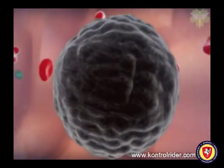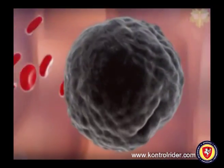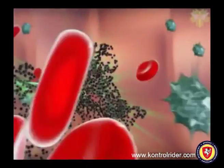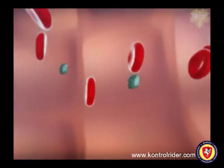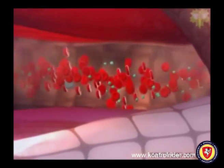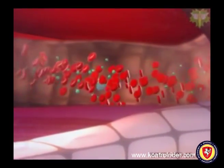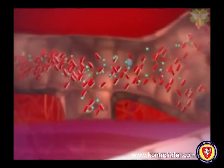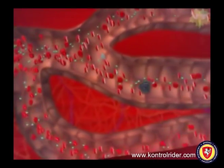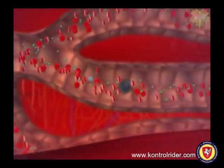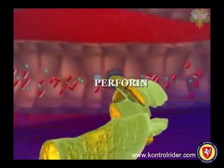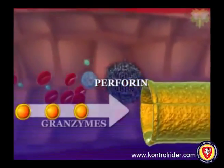Another mechanism involves programmed cell death, termed apoptosis, that results in the destruction of the nuclear DNA of the cancer cell. Natural killer cells contain membrane vesicles called cytotoxic granules that package the enzymes that kill the cancer cells. The most important enzymes involved in the apoptosis event of cancer cell death are the pore-forming protein called perforin and a set of proteases called granzymes.